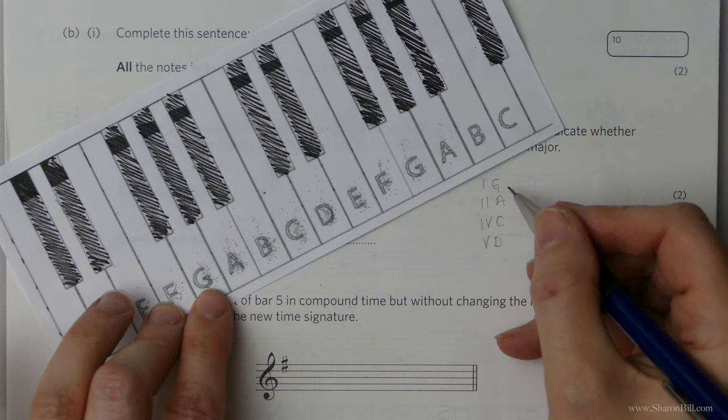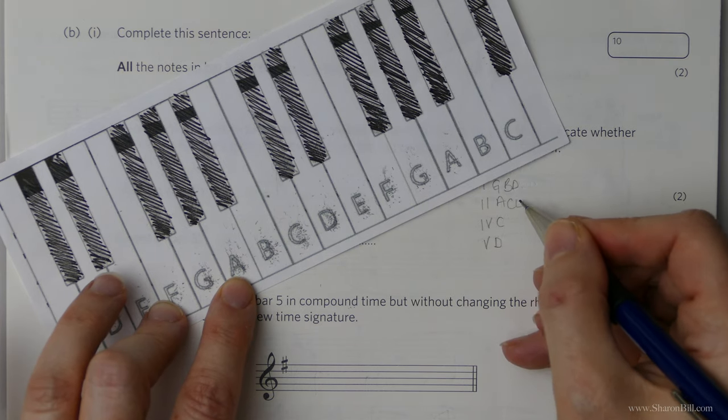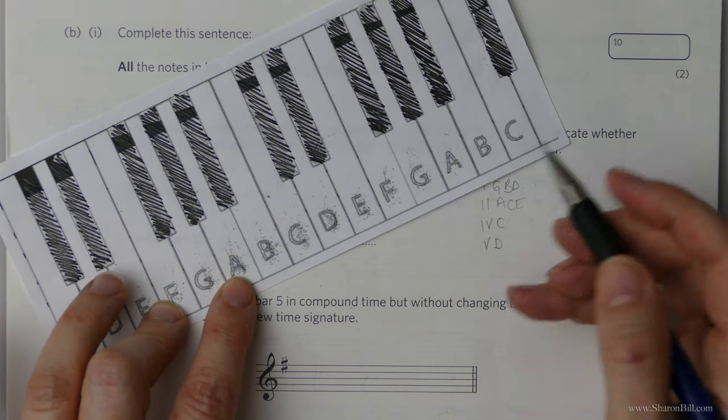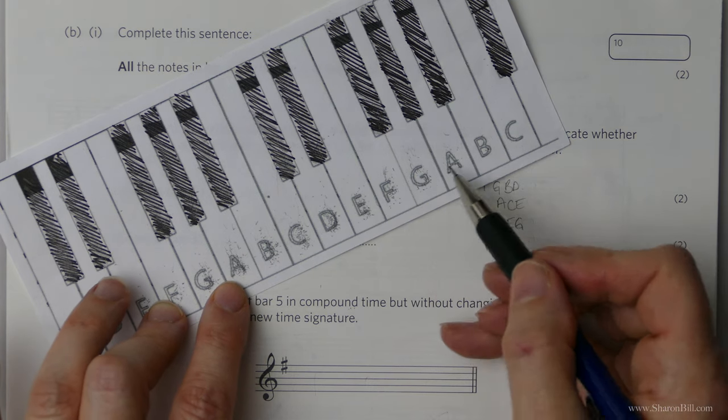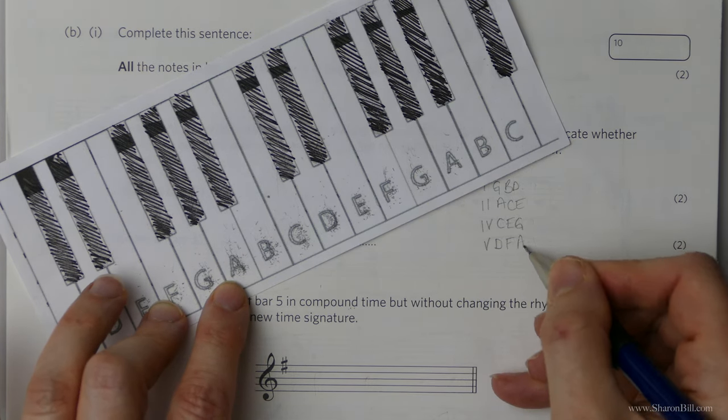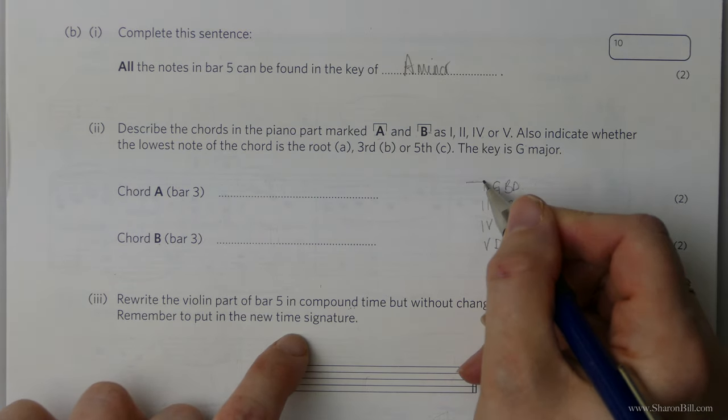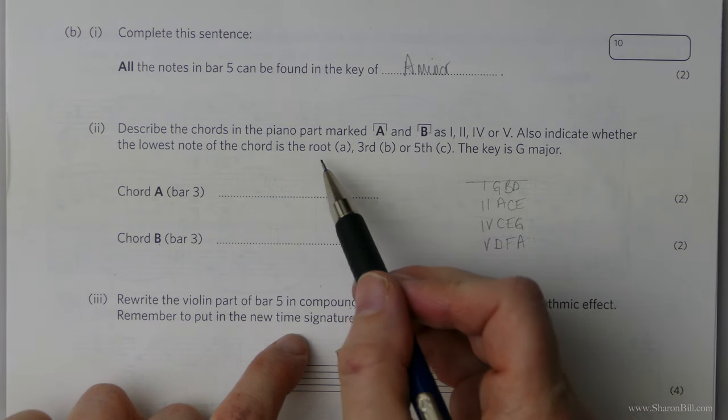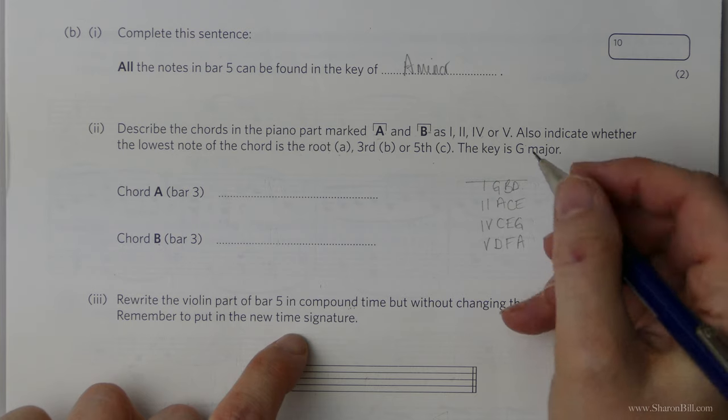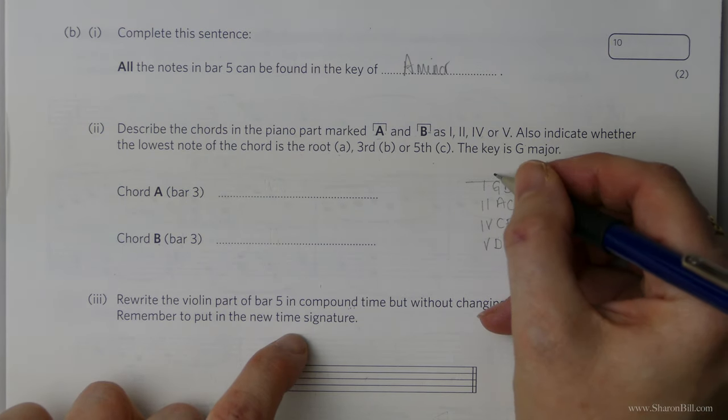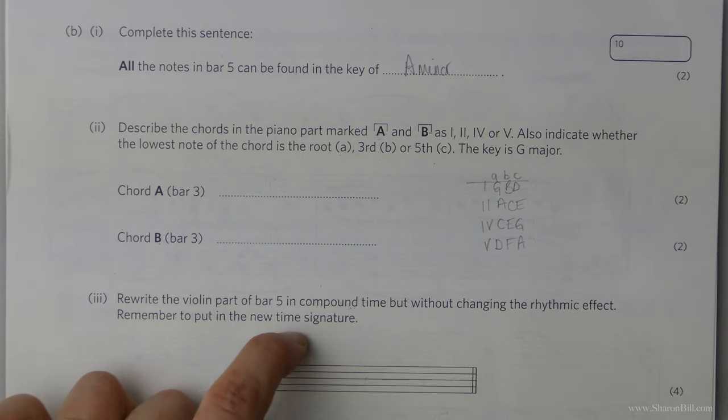And then we count first, third, fifth. So one, three, five. G, B, D. A, C, E. C, E, G. And then D, F sharp, A. Of course it's F sharp, but your key signature will deal with that. We're not quite there yet. Because we're also asked to show whether the chord will be in root position, first inversion, or second inversion. So which is the base note. So if we just mark out there then we can easily see what the base note is.